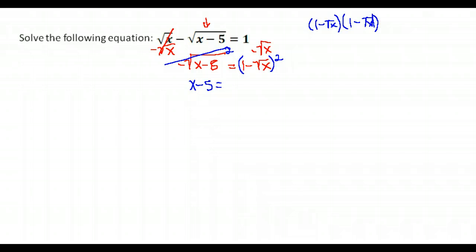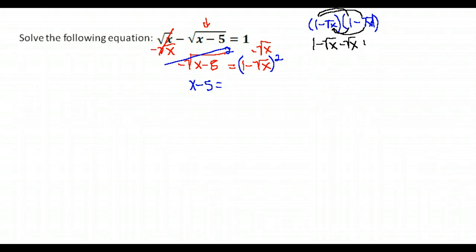Now this looks tricky, but let's go one step at a time. 1 times 1 is 1. 1 times negative root x is just negative root x. Now we take root x times 1: negative root x is negative root x. And negative root x times negative root x is positive x. You take root x times root x, you get root x squared, or just x, because the squared and the x cancel each other. Simplified, we have 1 minus 2 root x's plus x.